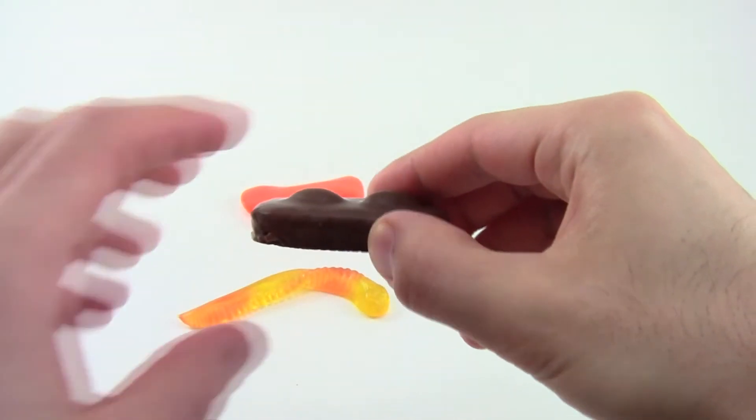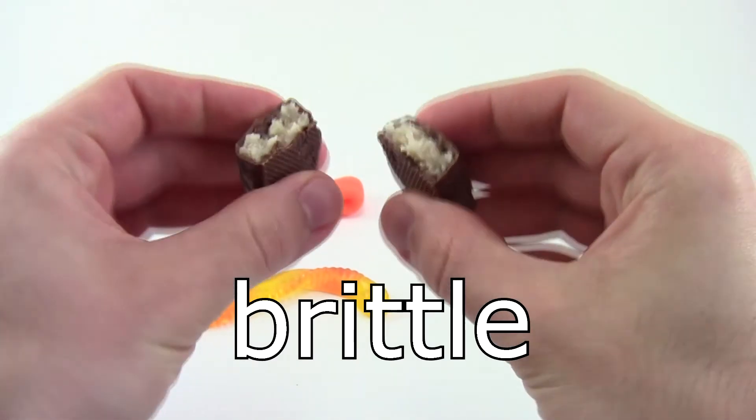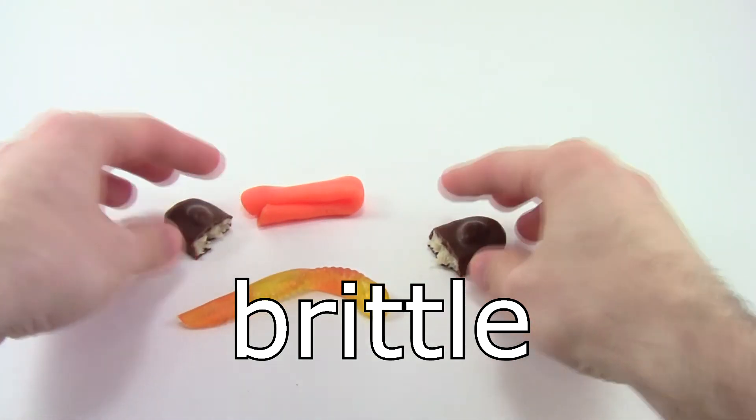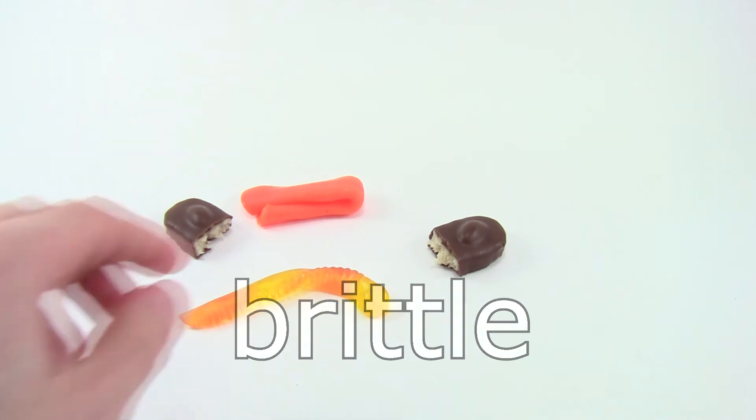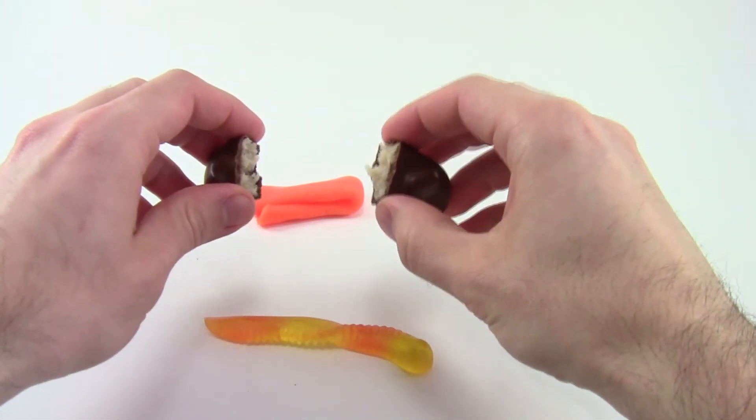Other foods, like this candy bar, snap very easily when you try to bend them. This type of behavior is called brittle. Now what do you think will happen if I take all of these items and put them in the freezer? Will they become more flexible like the gummy worm, or will they become more brittle like the candy bar?